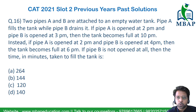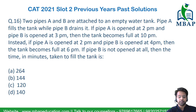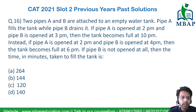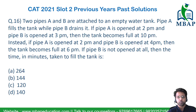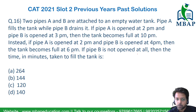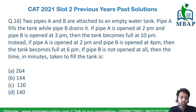If pipe A is opened at 2pm and pipe B is opened at 3pm, then the tank becomes full at 10pm. Instead, if pipe A is opened at 2pm and pipe B is opened at 4pm, then the tank gets filled by 6pm. If pipe B is not opened at all, then the time in minutes taken by pipe A to fill the tank is how much — that is the question.